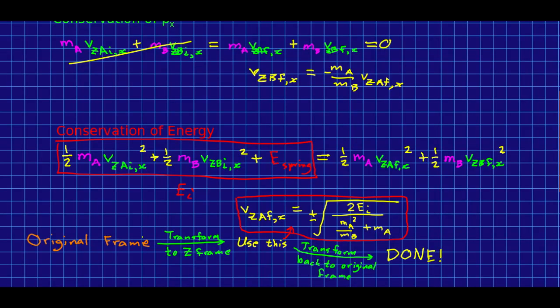Here is your strategy to solve this nasty problem. You take your original frame, you transform all the velocities into the Z frame. You have to calculate your initial energy in the Z frame. Careful, those are V in the Z frames. And then you just use this, and you transform back to the original frame, and you're done.